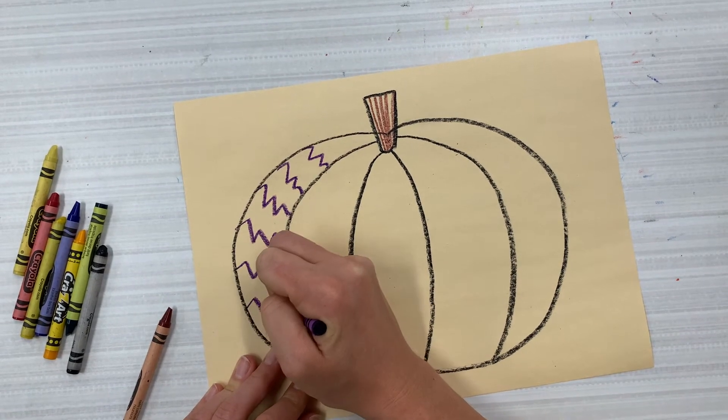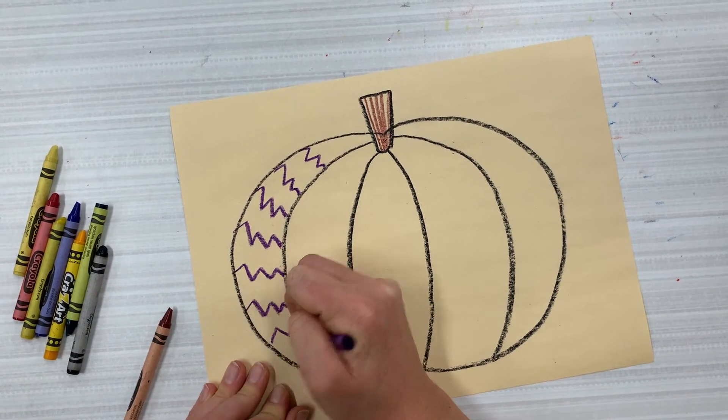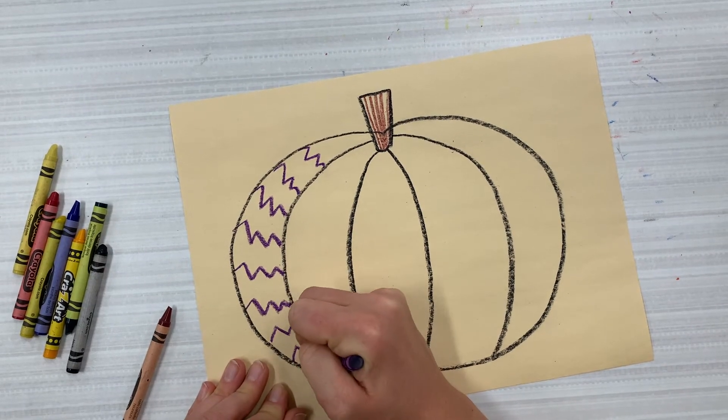So variety is basically different. I want to see different lines, different shapes, and different colors.